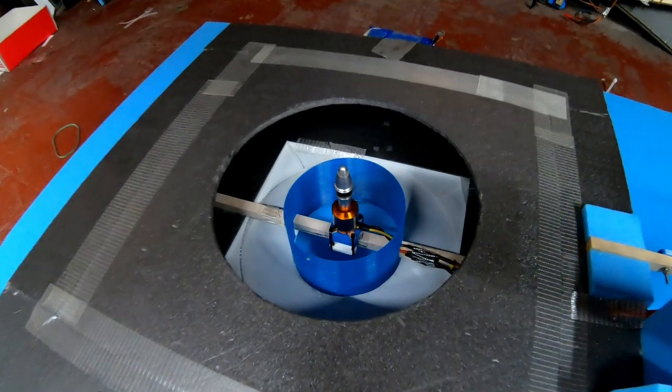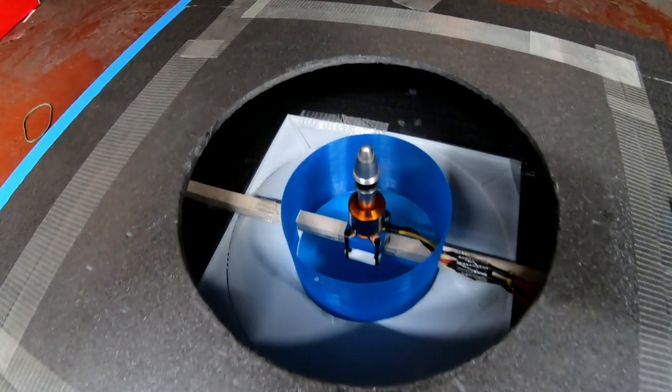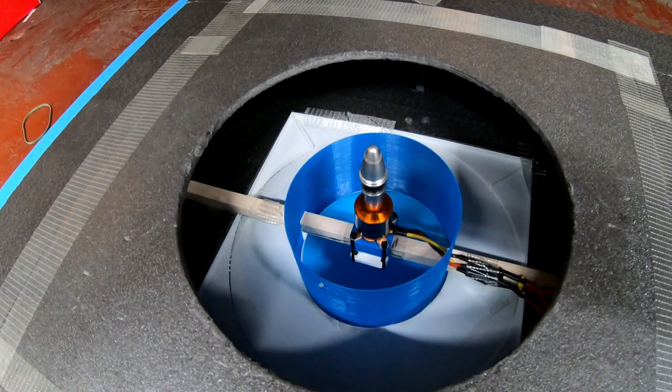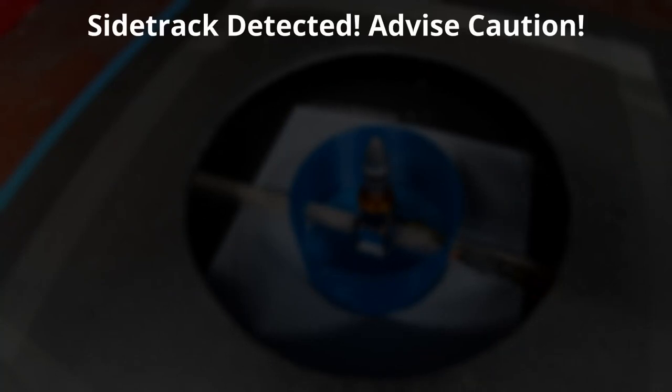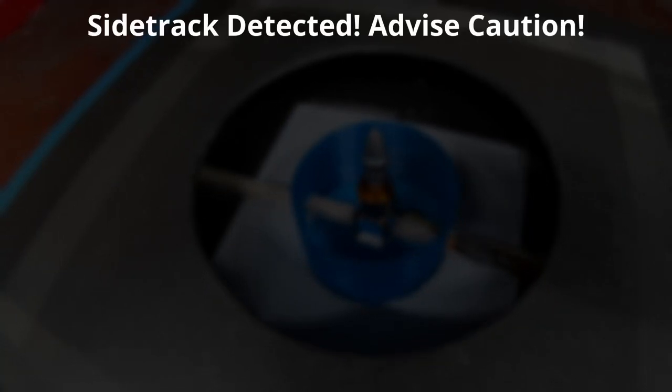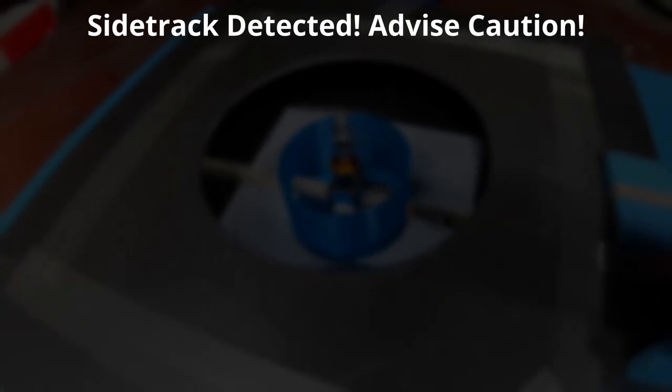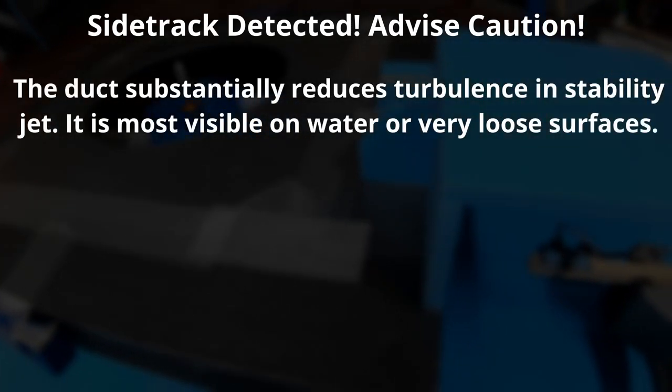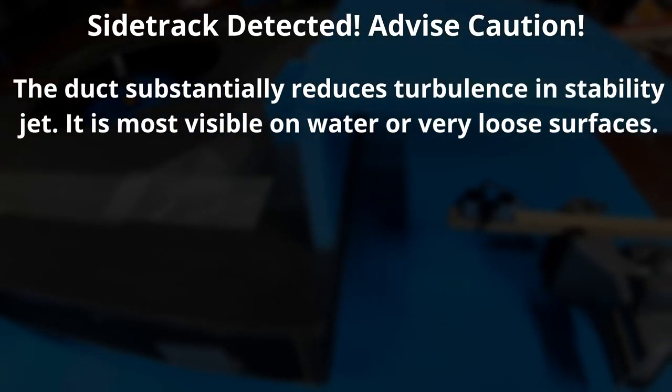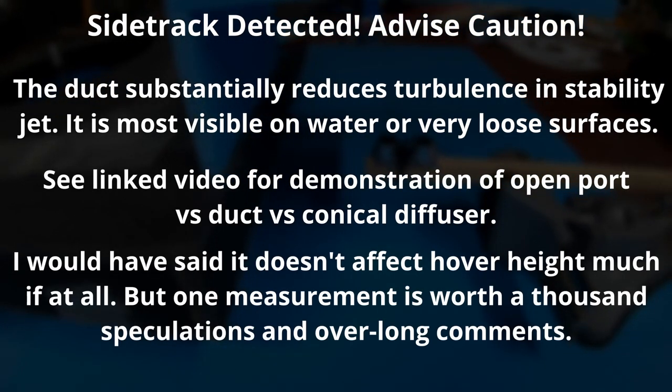As for the internal duct, I ran it with and without. If you had asked me, I would have said there wouldn't be a significant difference. The purpose of the internal duct was always about reducing turbulence on water, producing a cleaner stability jet. I didn't consider it made a big difference to lift, but here we go.